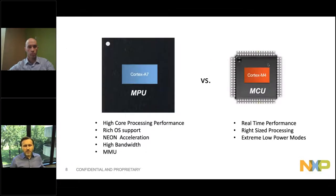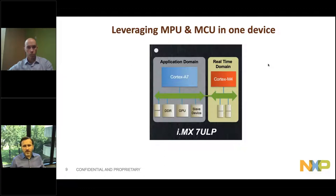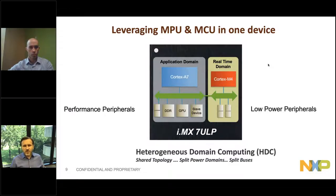You have two key use cases: an MPU use case and an MCU use case. The MMU gives you the ability to run rich operating systems and provides Neon acceleration support for vector calculations. The MCU concentrates more on real-time performance, right-sizing the processing, and achieving low power. With the 7ULP, we bring those two worlds together, providing an application domain and a real-time domain, connecting performance peripherals to the application domain and low-power peripherals to the real-time domain.